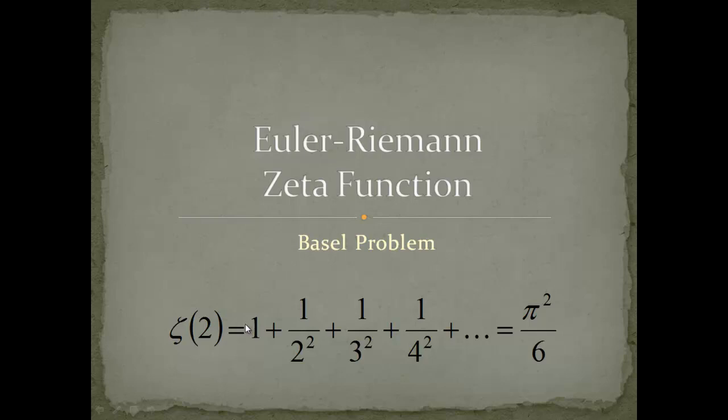The Basel problem is the sum 1 plus 1 over 2 squared plus 1 over 3 squared plus 1 over 4 squared and so forth. What Euler found out is that this value equals pi squared over 6. If you remember from the definition of the zeta function, this is just the zeta function evaluated at the value of 2.